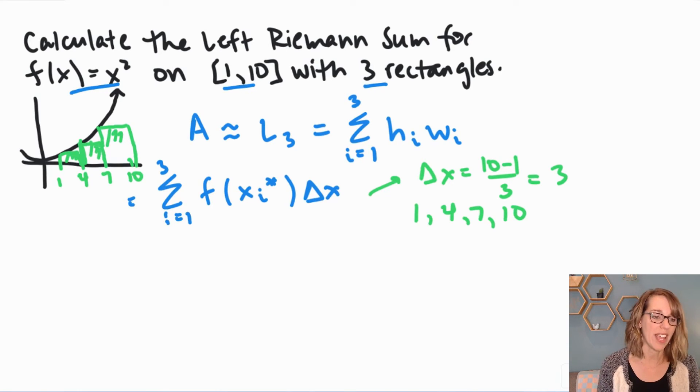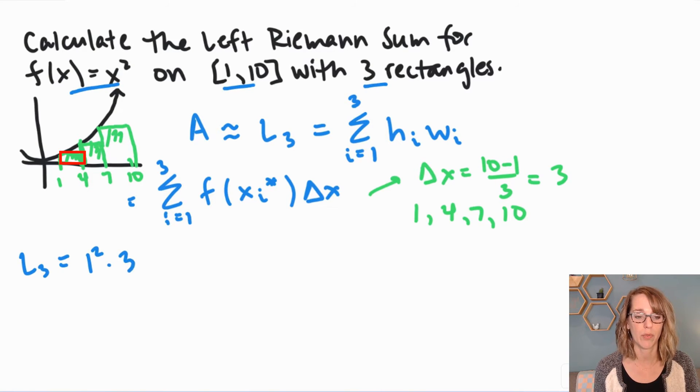If I do this by hand, I can come up with my areas pretty easily. I want the sum of each of those functions times delta x. As I go through rectangle 1 first, the height of rectangle 1 is going to be f of 1, which is 1 squared, times the width, which is 3.